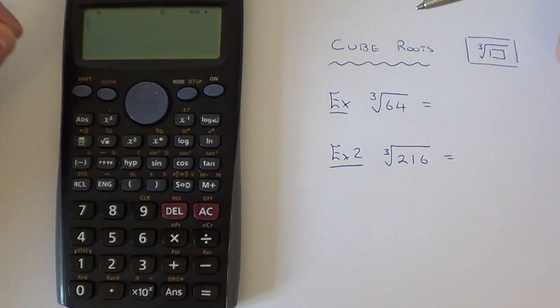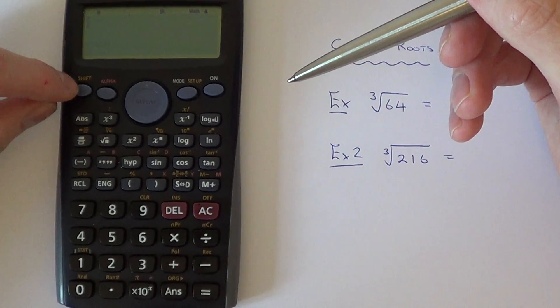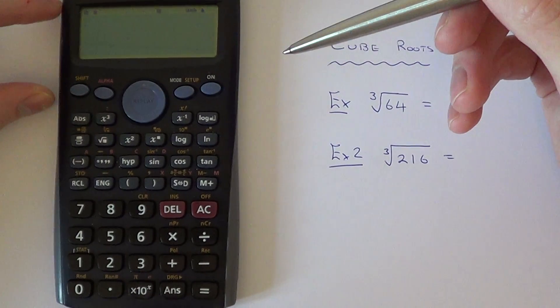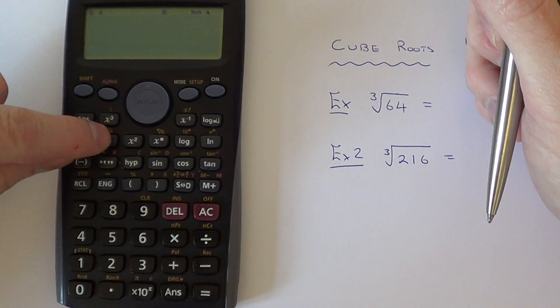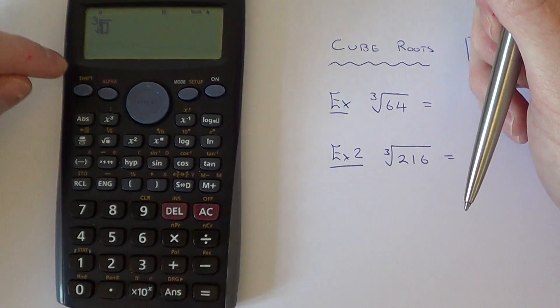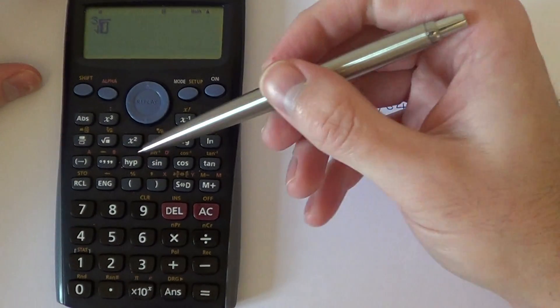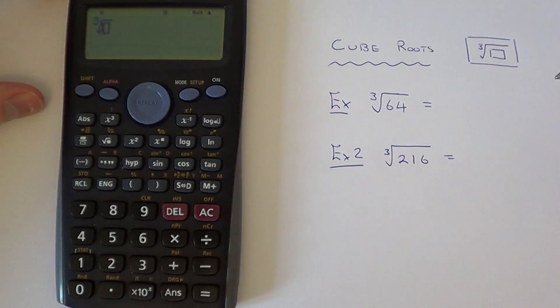So since it's on the second function of the key we have to press shift, there's no need to hold that down, then hit the square root key and you see the cube root comes up because it's the second function on that key.